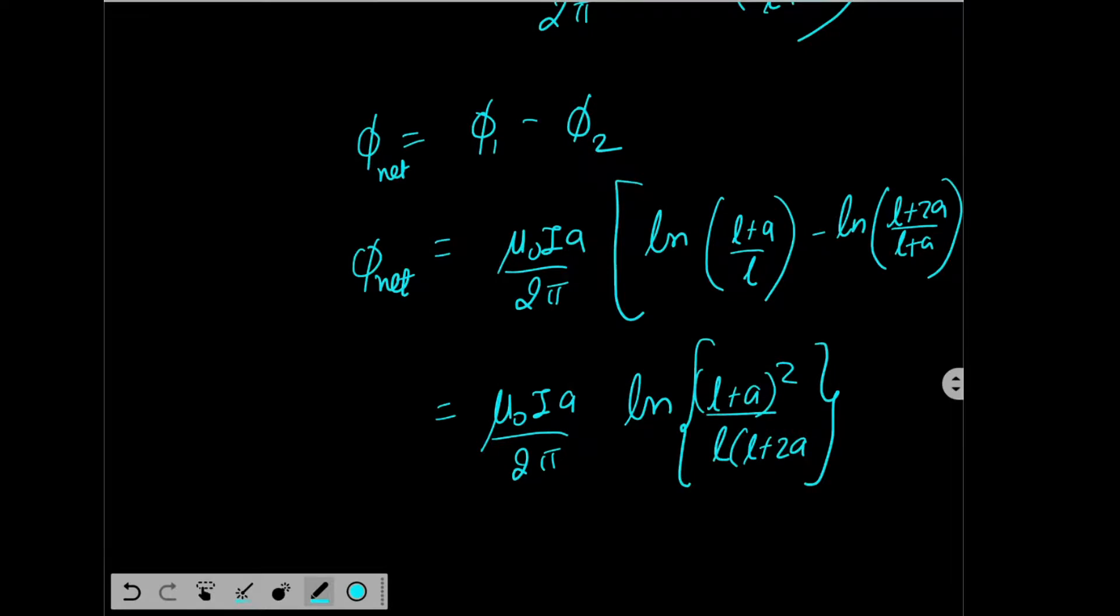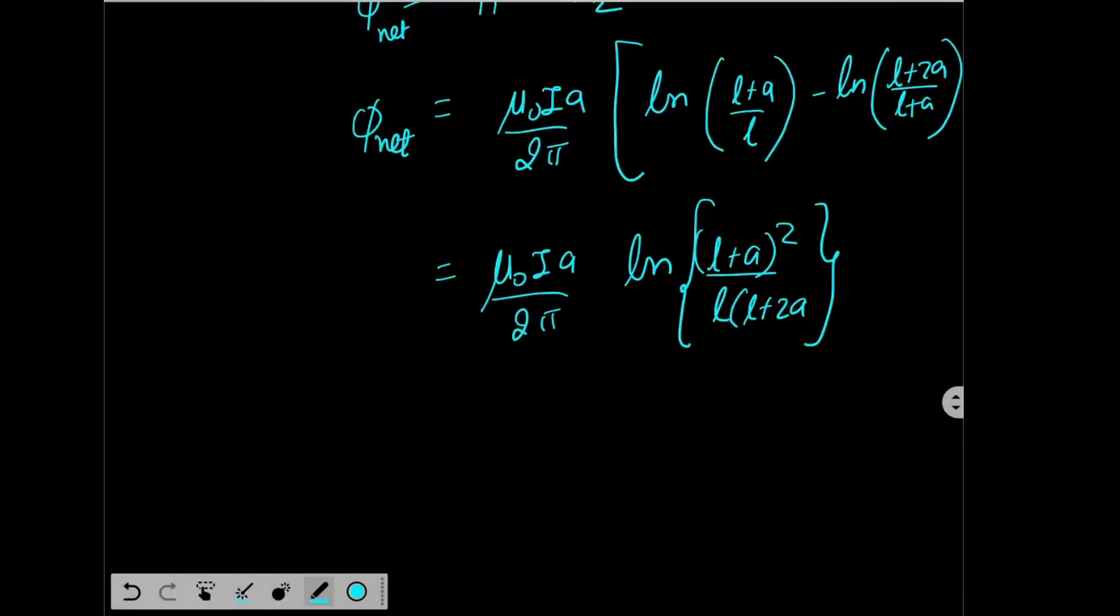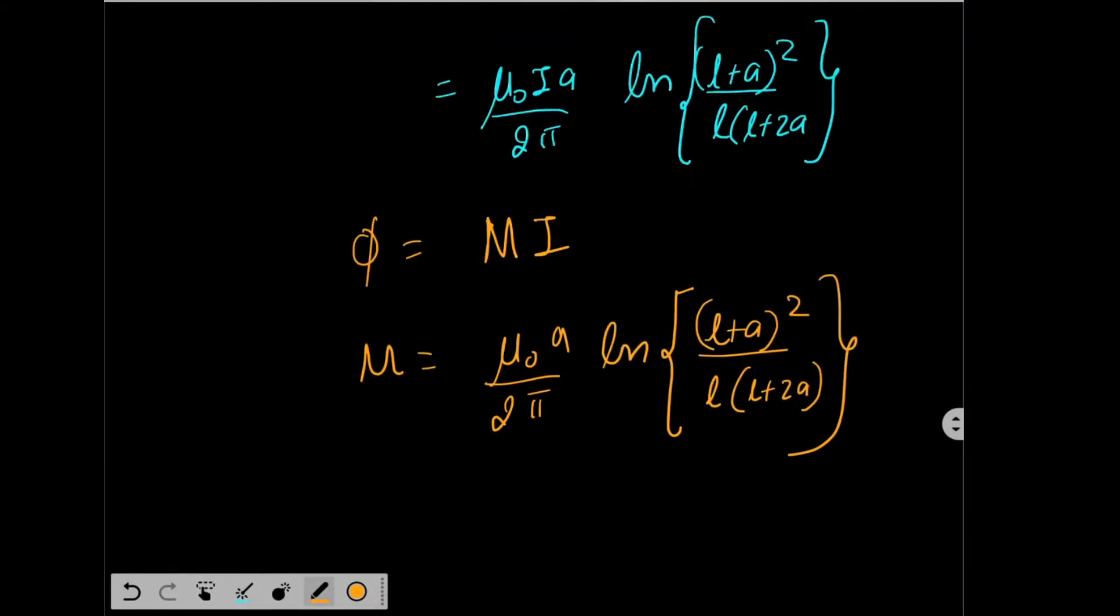And the question is asking what is the mutual inductance. So that is very easy. We can say that phi is equal to mutual inductance multiplied by I. So M will be equal to Mu0 A by 2 pi, log L plus A whole square by L L plus 2A. So this is the mutual inductance.